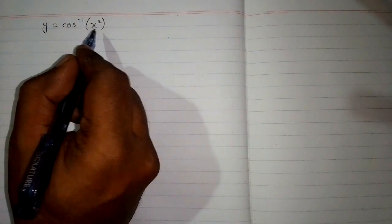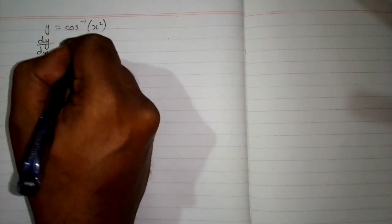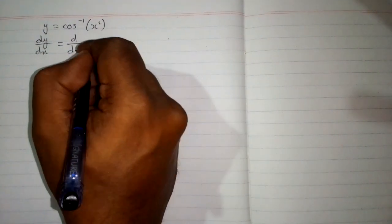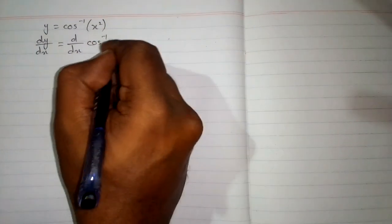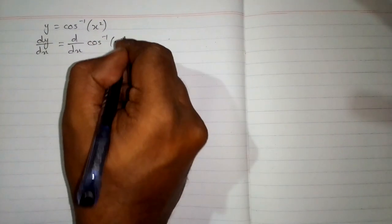In this video we will find the derivative of inverse cosine of x square. So we have y is equal to inverse cosine of x square. First we will take the derivative of both sides, so we have dy by dx equals dy by dx of inverse cosine of x square.